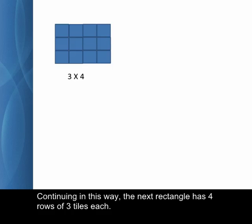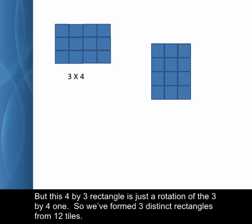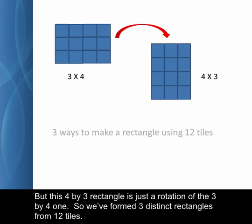Continuing in this way, the next rectangle has 4 rows of 3 tiles each. But, this 4 by 3 rectangle is just a rotation of the 3 by 4 one. So, we've formed 3 distinct rectangles from the 12 tiles.